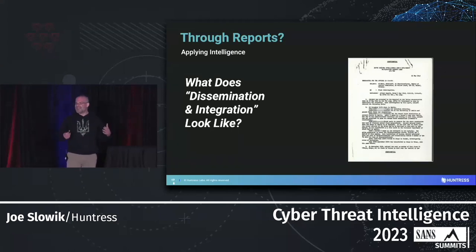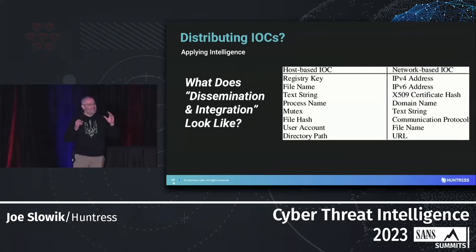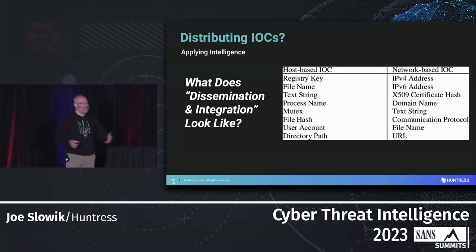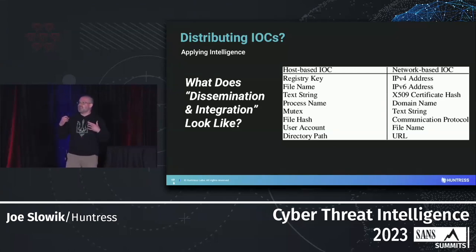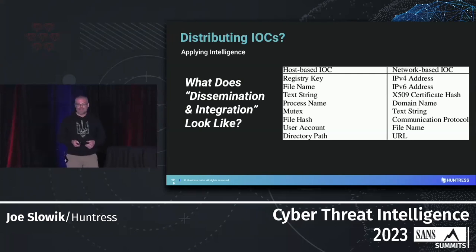From a tactical integration and dissemination standpoint, we have to ask: how am I getting this information out quickly enough to matter, and in a form stakeholders can actually use to improve decision-making? Reports have their use but maybe not quite what we're looking for here. What about IOCs? Everyone wants to talk about the problems with indicators — they're atomic, they go stale, they're situationally dependent. Indicators can be useful, especially for immediate security outcomes, but there are problems with execution and understanding.